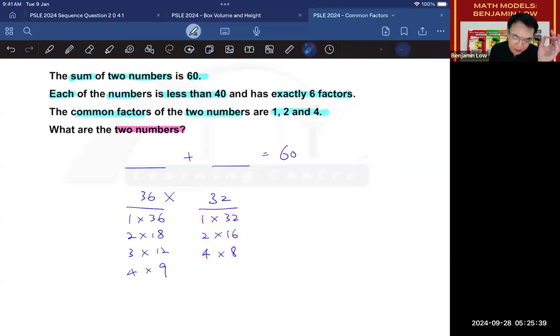It also has the factors of 1, 2, and 4. So it has fulfilled everything and it is also less than 40. So let's say this number is 32.